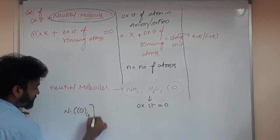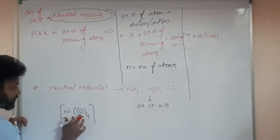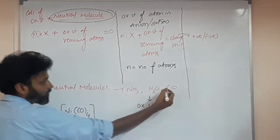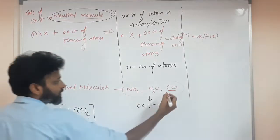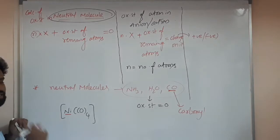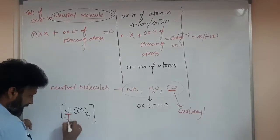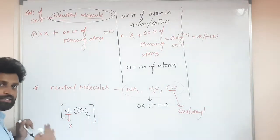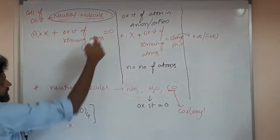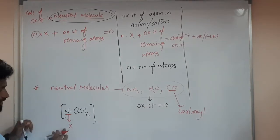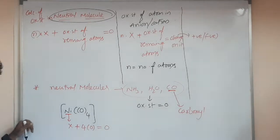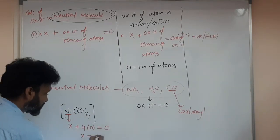Example: Ni(CO)₄. Nickel is bonded with four CO (carbonyl) groups. CO is a neutral molecule, so its oxidation state is zero. Taking nickel as x: x + 4(0) = 0 (neutral molecule, no charge). Therefore x = 0. Nickel's oxidation state in Ni(CO)₄ is zero.